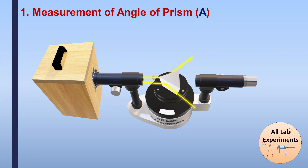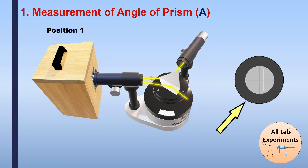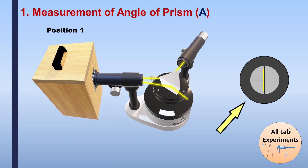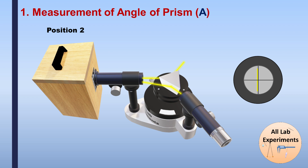We set the telescope in position one and observe a yellow light slit. We shift the telescope so that the cross wire is aligned on the yellow line and measure its reading. There are two vernier scales on the spectrometer — one visible here and the other at 180 degrees difference. Similarly, we set the telescope in position two and measure the position of the reflected light.